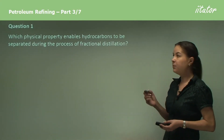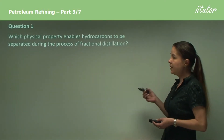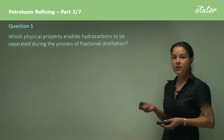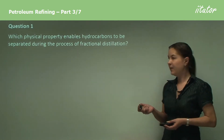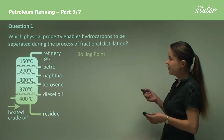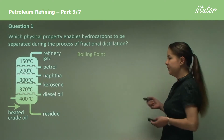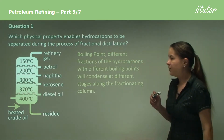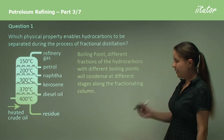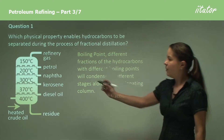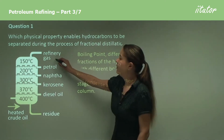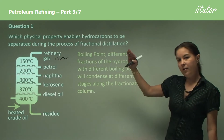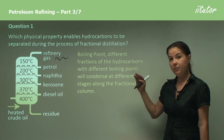Question 1: Which physical property enables hydrocarbons to be separated during the process of fractional distillation? The answer is boiling point. So back to our diagram once again — the smaller the hydrocarbon compound, the higher up on the column and the lower the boiling point.